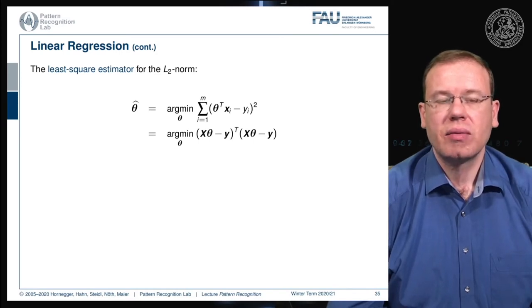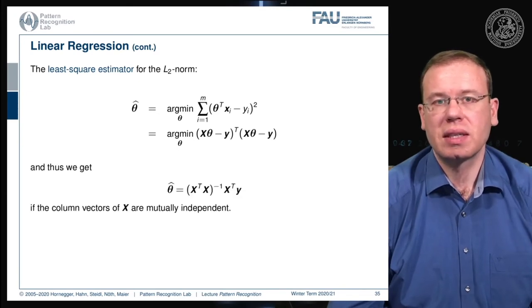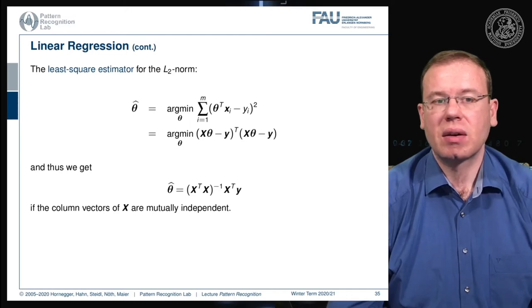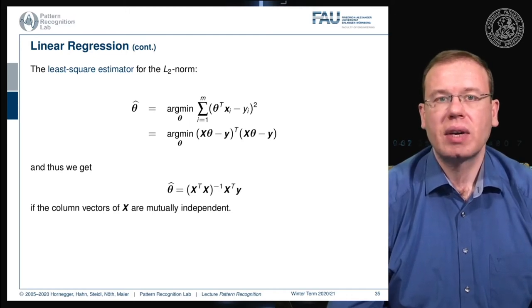If you take the partial derivative with respect to theta and do the math, you will find the solution of the so-called pseudo-inverse. This is the Moore-Penrose pseudo-inverse given as x transpose x inverted times x transpose times y. This will give us an inverse which enables us to compute the parameter vector theta. One thing to keep in mind is that this will work if the column vectors of x are mutually independent. If you have dependency in the column vectors, you will not have full rank and will run into problems.